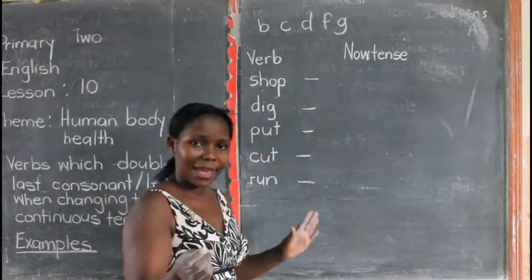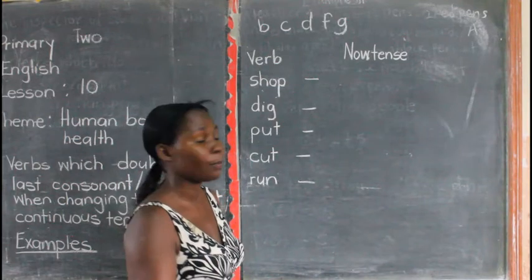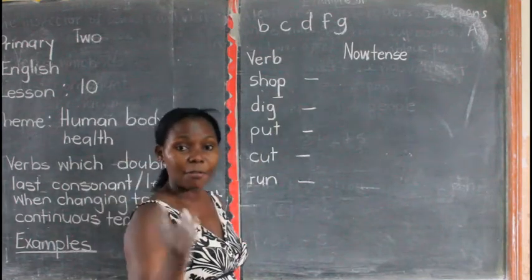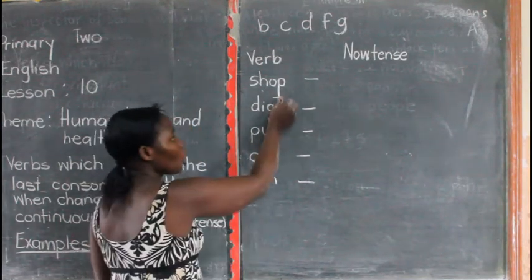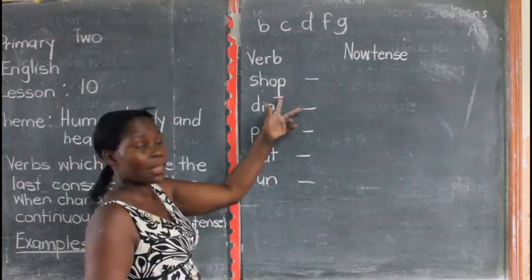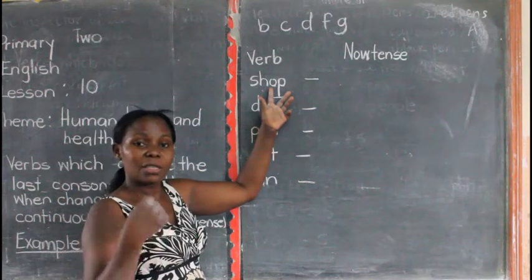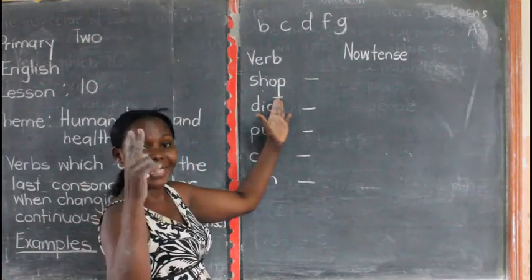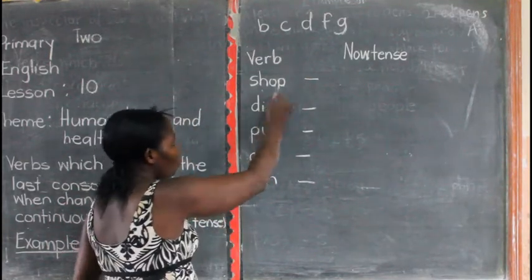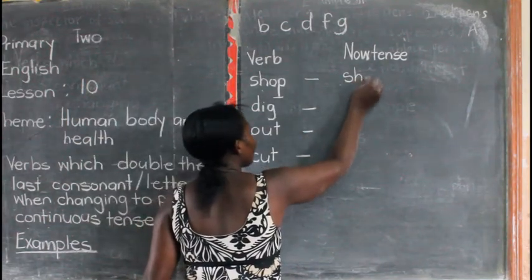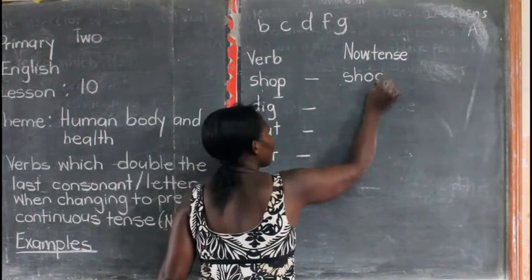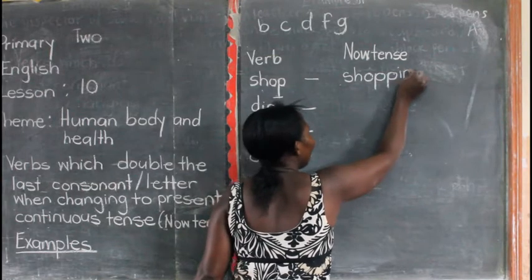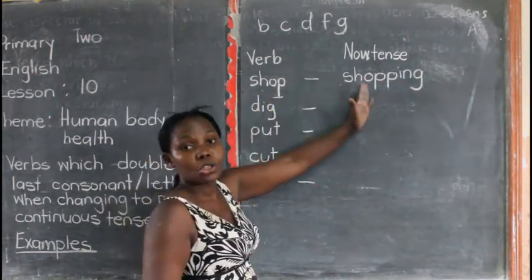Verbs which double the last letter — when the last letter is a consonant letter near one vowel letter, when you change it to now tense or present continuous tense, you double it. Double means two — you make it two. After doubling, we add I-N-G. For example, from 'shop' to 'shopping.'